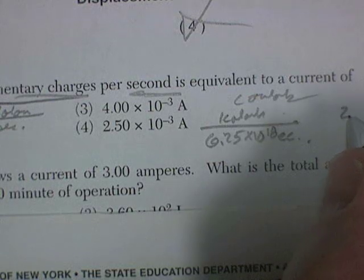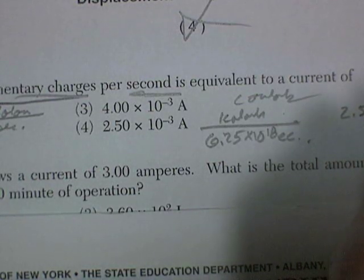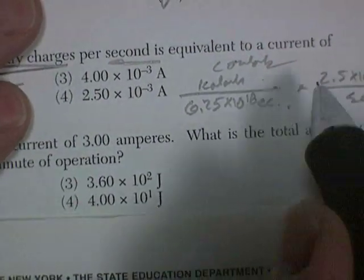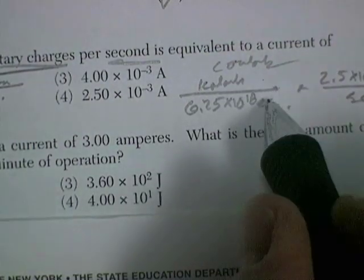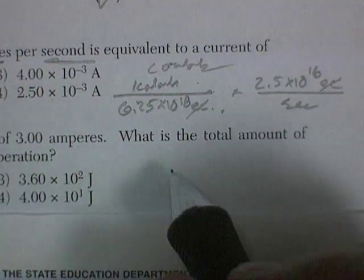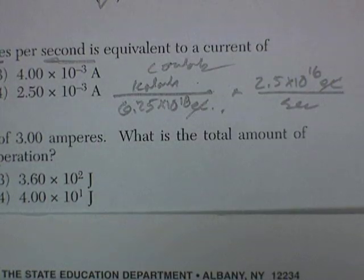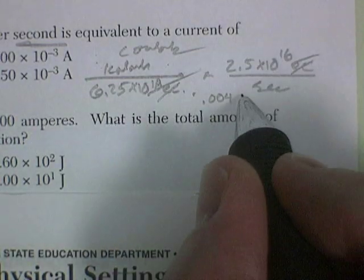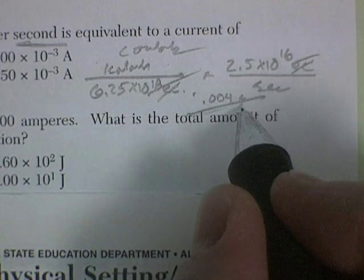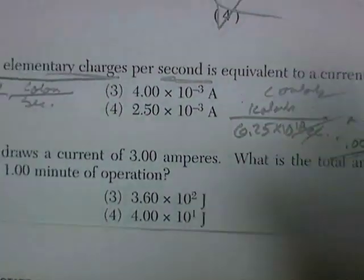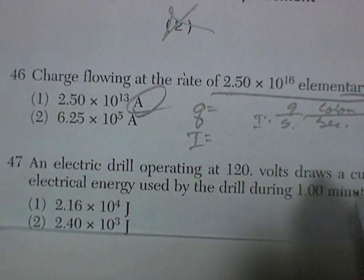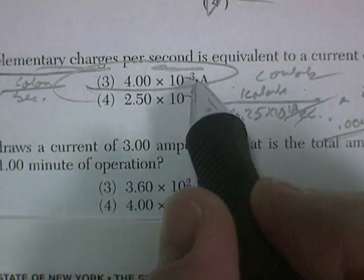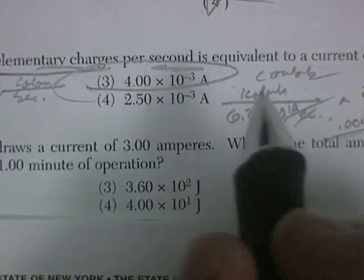And I've got 2.5 times 10 to the 16 elementary charges per second. So I multiply and then divide, and elementary charges will cancel out. And I'll be left with coulombs. Let's come up with a number. And when I divide I get 0.004 coulombs per second, or 0.004 amps. And well, I only have one answer. You're going to have to use the exponent. It's got to be this one. It's the only one with a 4 in it. But in fact, it's 4 times 10 to the negative third. So that's 0.004 amps. So that was the correct answer.